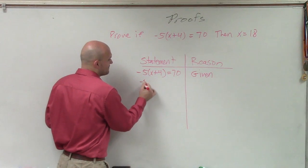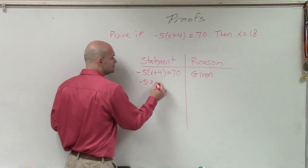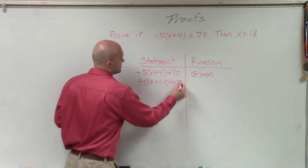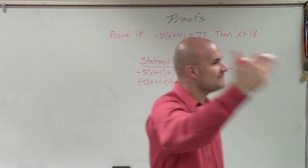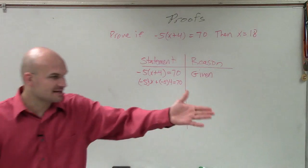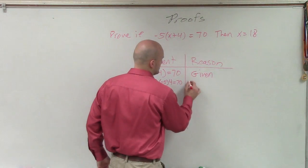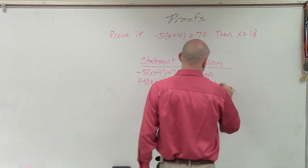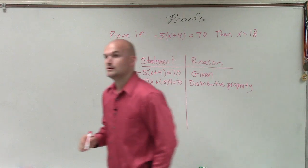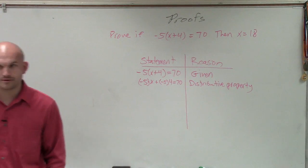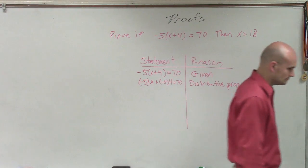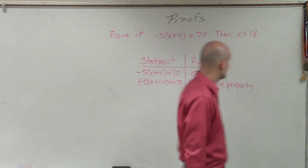So therefore, I can say negative 5 times x plus a negative 5 times 4 equals 70. Right? I distributed that negative 5 to both values, right? Now, Alexander, why did I do that? And exactly, you said you're going to apply distributive property. I wanted you to have that written out. So you write in distributive property.